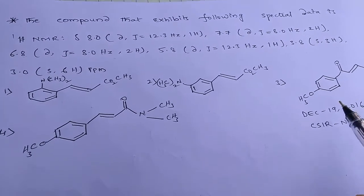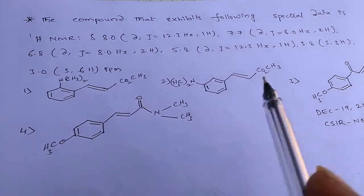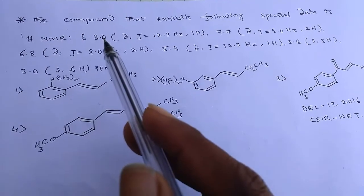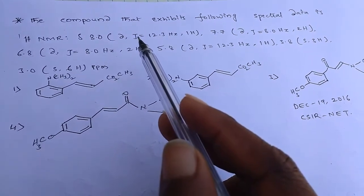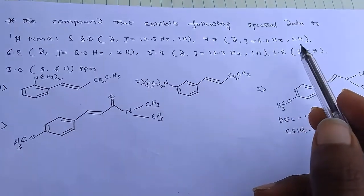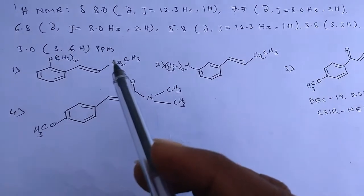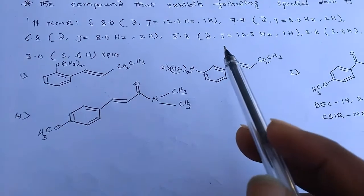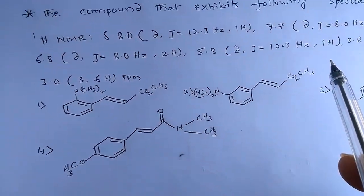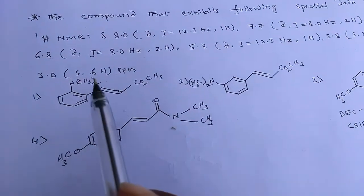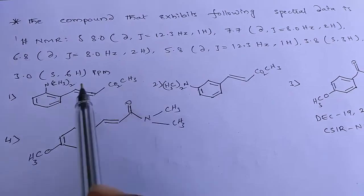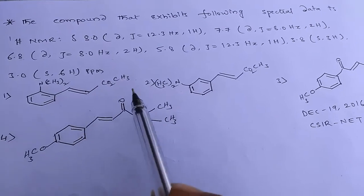Hi, this is Chanjiri. This question appeared in December 19, 2016 CSIR NET. The question is: the compound that exhibits the following spectral data. We have HNMR spectral data: δ 7.7 doublet J=12.3 Hz, 1H; 1.7 doublet J=8 Hz, 2H; 6.8 doublet J=8 Hz, 2H; 5.8 doublet J=12.3 Hz, 1H; 3.8 singlet, 3H; and 3.0 singlet, 6H. By using this HNMR spectral data we should find the appropriate structure.